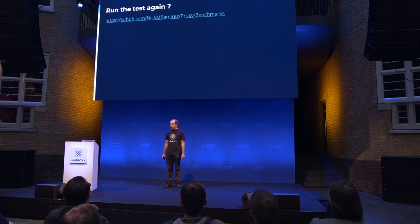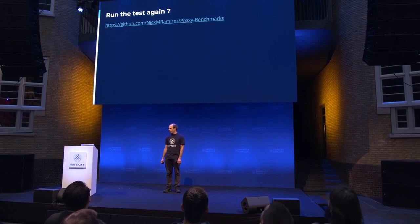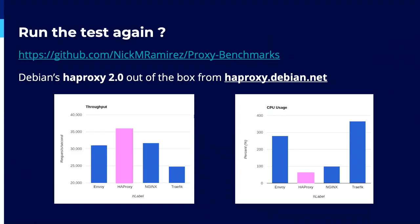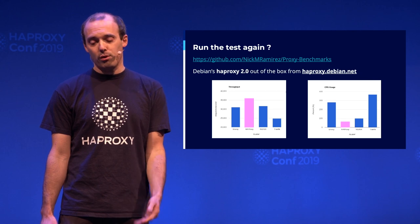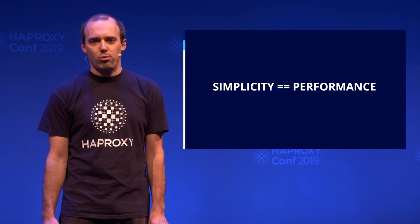If we run the test again — my coworker Nick Ramirez decided to rebuild the entire test platform. This time he prepared a complete test suite that anyone can reproduce. He picked the configuration from the blog post and used HAProxy 2.0 directly from the Debian repository, the standard one. Out of the box, without doing anything, you notice that HAProxy is back to its place as the highest performer, and the lowest CPU and memory usage. So it also means that simplicity brings you performance.